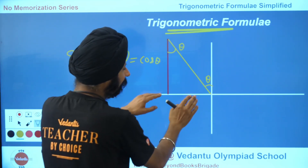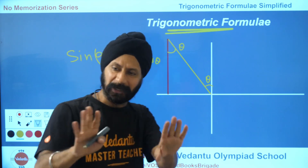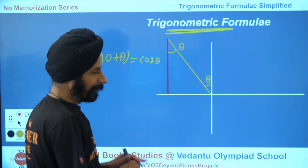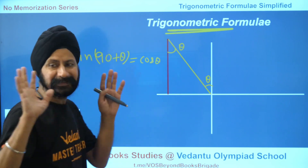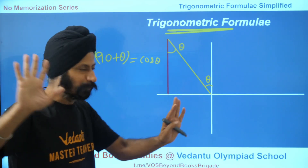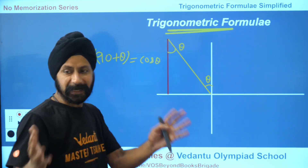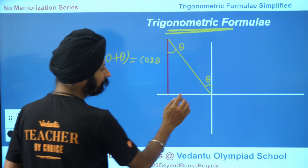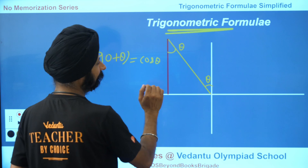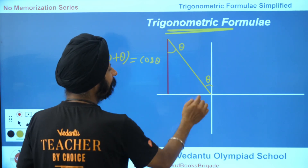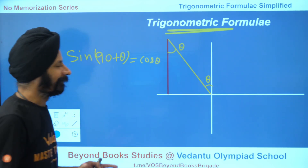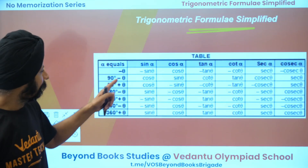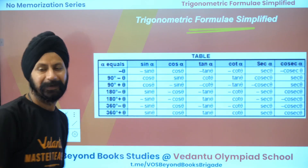This triangle — in this triangle, if I know this base, this is always the trick. This is the base, this is the perpendicular. So in this perspective, you know the sign of this triangle. If you know the perspective of this triangle, you know the sign. Go back to this table: sine of 90 plus theta is cos theta.